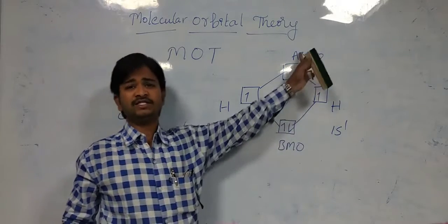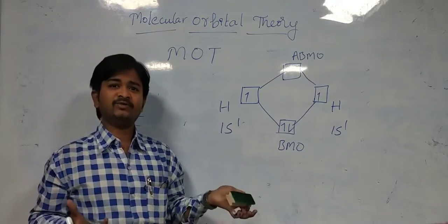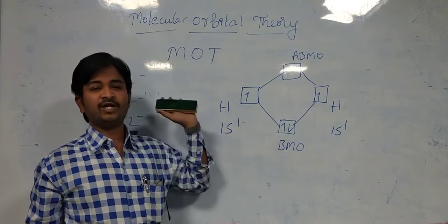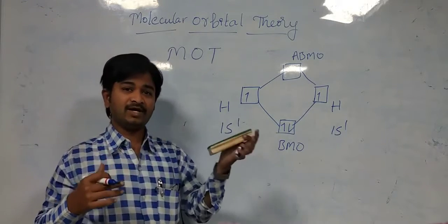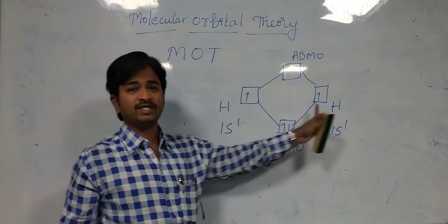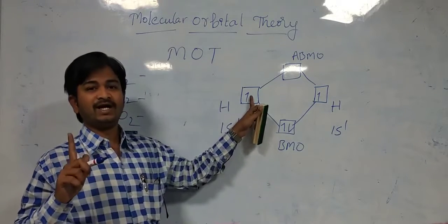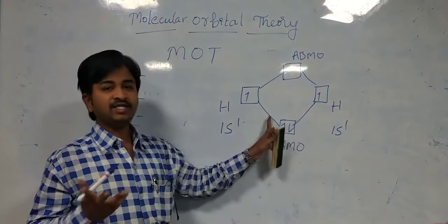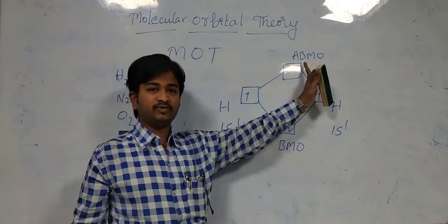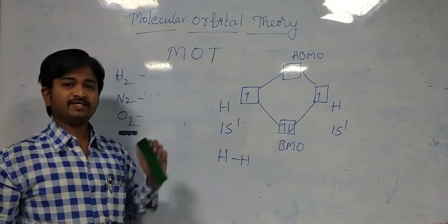Why do we call this a bonding molecular orbital and this an anti-bonding molecular orbital? In general, if there is good, there will be bad. If there is positive, there will be negative. Like in a movie — if there is a hero, there will be a villain. The same way in a molecule, one bond wants to make a bond, another wants to break them. Here, hydrogen has one available electron — it combines with the other hydrogen, and there are no repelling electrons. So we can form a bond here — there is no repulsion, and we can easily form a bond with another hydrogen.